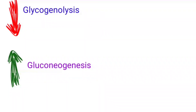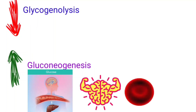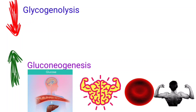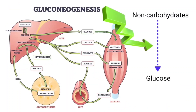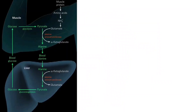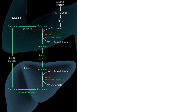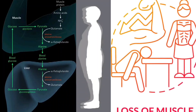Gluconeogenesis supplies glucose to maintain glucose levels and provides it to glucose-dependent tissues. One of the main precursors for gluconeogenesis is amino acids, and among these, alanine is the main amino acid released from muscle and used in gluconeogenesis. This is the reason behind muscle wasting and negative nitrogen balance during starvation.